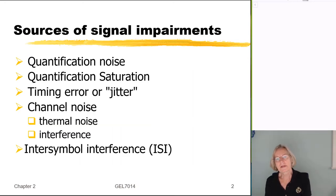But let's just start with the laundry list. What are the different sources of signal impairments that we could have in a digital system? We talked about quantification noise. We looked at quantification saturation when we don't have enough levels. These two things clearly are going to impact the quality distortion of the reconstructed signal at the receiver.